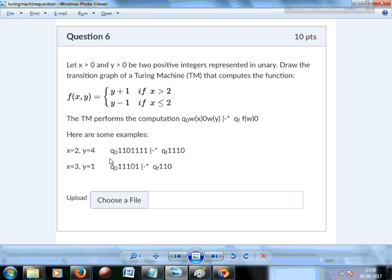Here if you see, since x is equal to 2, first time there are 2 ones and then it is delimited by 0, and then y is followed with as many ones. So this y is equal to 4, there are 4 ones.